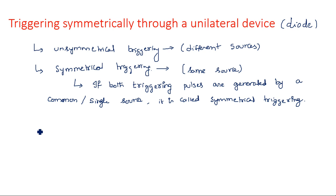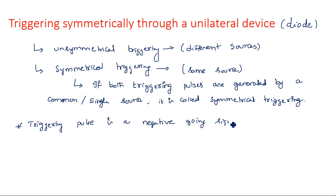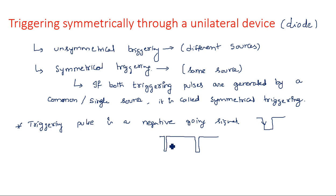The triggering pulse is a negative going signal. A negative going signal has a more positive peak with a wide positive width and a very narrow negative width. The pulse width of the negative cycle is very low whereas the positive cycle is very high. This is what the triggering pulse looks like.